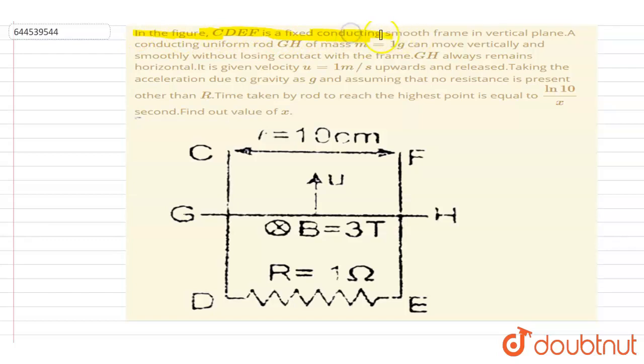is a fixed conducting smooth frame in a vertical plane. A conducting uniform rod GH of mass 1 gram can move vertically smoothly along the frame without losing contact. GH remains horizontal and is given a velocity 1 meter per second...